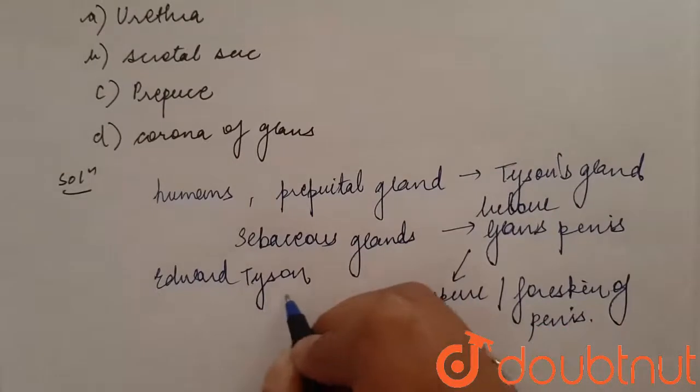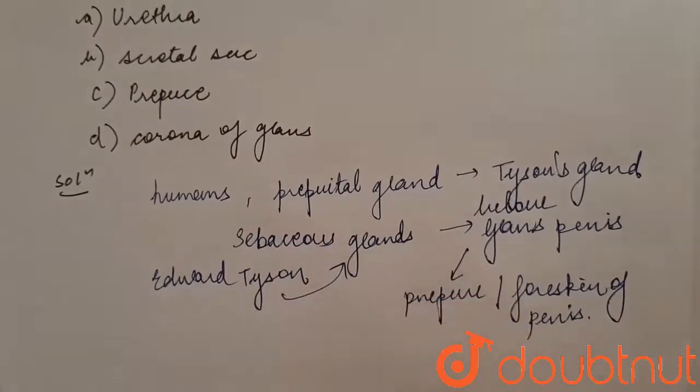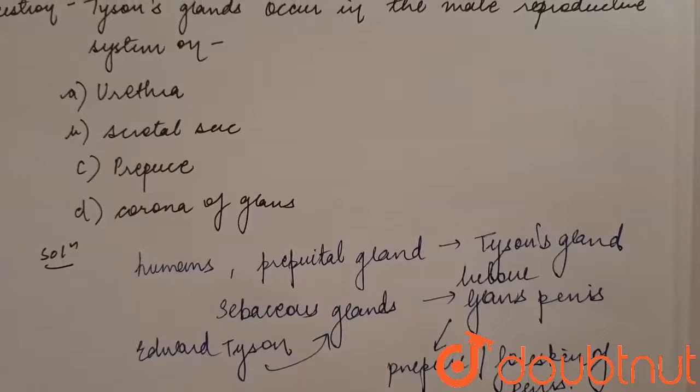So students, our answer to the question would be option c, prepuce. The answer is option c.